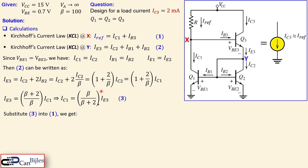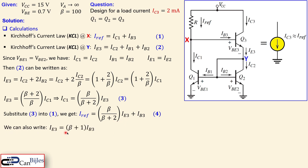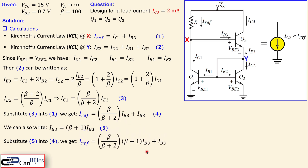Substituting equation number three into equation number one gives I_ref = (β/(β + 2))·IE3 + IB3. We call this equation number four. We also know that IE3 = (β + 1)·IB3, which is equation number five. Substituting equation number five into equation number four, we get an expression containing only the unknown IB3.